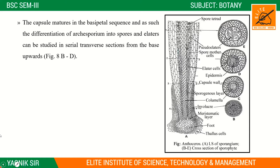The capsule matures in a basipetal sequence, and the differentiation of the archesporium into spores and elaters can be studied in serial transverse sections from the base upward. Elaters are sterile cells formed among the spore tetrads.